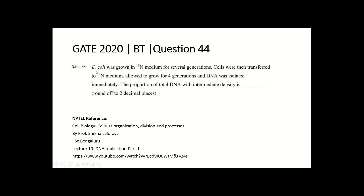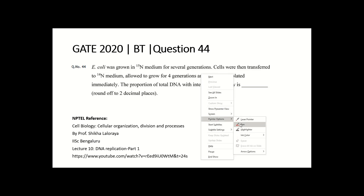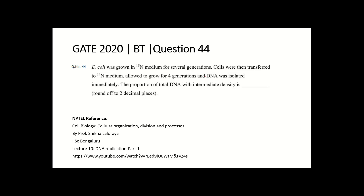In this video we will discuss question number 44 of GATE 2020. The question states that E. coli was grown in ¹⁵N medium for several generations, then cells were transferred to ¹⁴N medium, allowed to grow for four generations, and DNA was isolated. The proportion of total DNA with intermediate density is to be found.